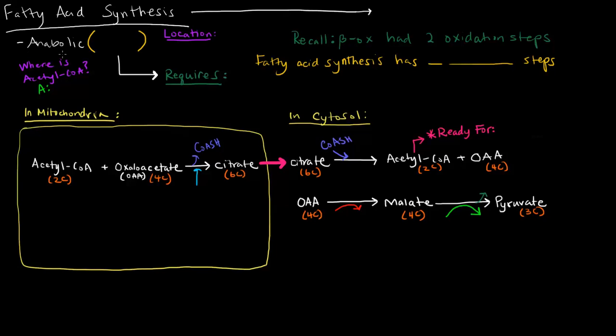If you recall, the catabolic process was beta-oxidation, so the anabolic process would be a reductive pathway. If it's a reductive pathway, it's going to require a reducing agent, and we're going to require a specific reducing agent, and that is NADPH. We'll talk about that in more depth in just a moment.